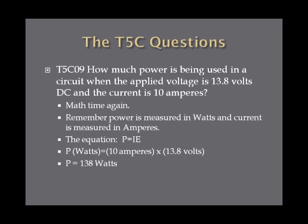How much power is being used in a circuit when the applied voltage is 13.8 volts DC and the current is 10 amperes? Power is measured in watts and current is measured in amperes. Using the equation P equals IE: P in watts equals 10 amperes times 13.8 volts — 10 amperes is the I for current, multiplied by 13.8 volts which is E — and you get P equals 138 watts.